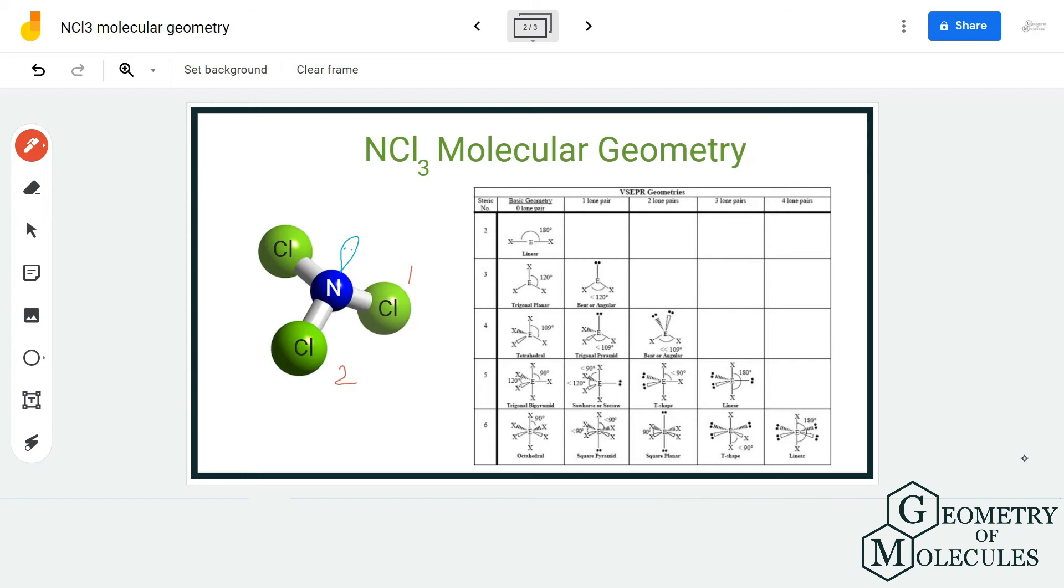As the steric number is four and there is one lone pair, the molecular geometry is trigonal pyramidal. So the molecular geometry for NCl3 will be trigonal pyramidal.